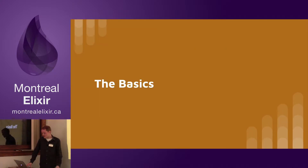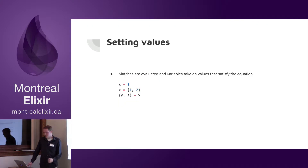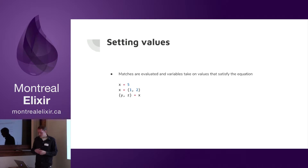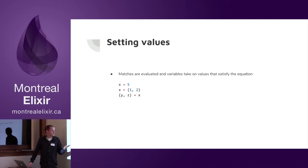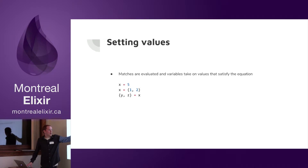So let's get into actually using it. We can use it to set values — X being set to 5, or X being set to {1, 2}. These evaluate because X can take on those patterns. The second one also evaluates because Y takes on 1 and Z takes on 2. But what if we wanted to pattern match with the variable Z already having a specific value?